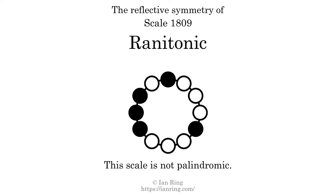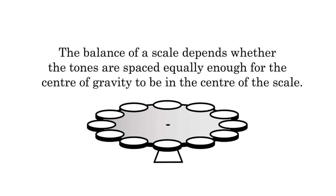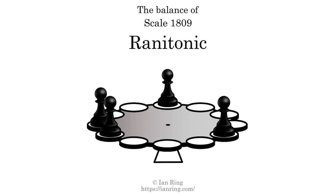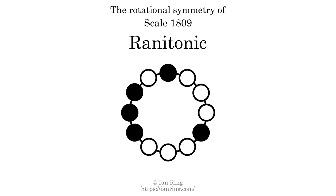This scale has no reflective symmetry. This scale has a different pattern of intervals ascending and descending, so it is not palindromic. This scale has no ridgetones. The balance of a scale depends whether the tones are spaced equally enough for the center of gravity to be in the center of the scale. This scale is not balanced. The inverse of a scale is a mirror image — it is what you get when the sequence of intervals is reversed. The inverse of this scale is scale 285, also known as xerotonic. This scale is chiral; it cannot transform into its inverse by rotational transformation. This scale has no rotational symmetry.